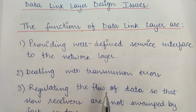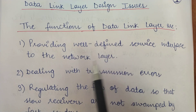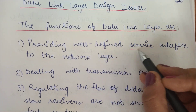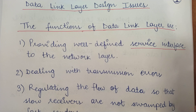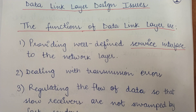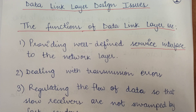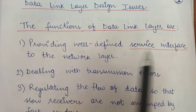There are three main functions of a data link layer. The first one is providing a well-defined service interface to the network layer. An interface is basically a medium through which one layer communicates with another layer. Since a layer below provides services to the layer above it, the data link layer — which is below the network layer — provides services to the network layer through this interface.